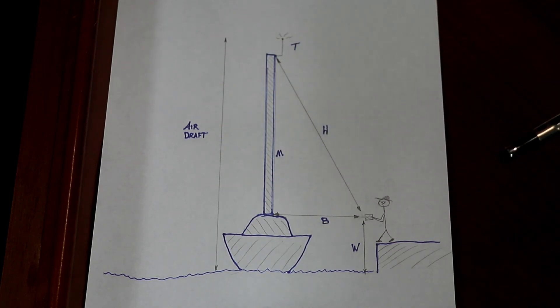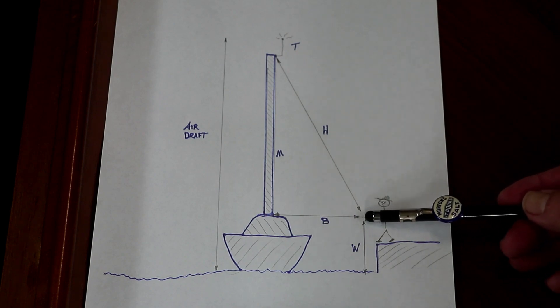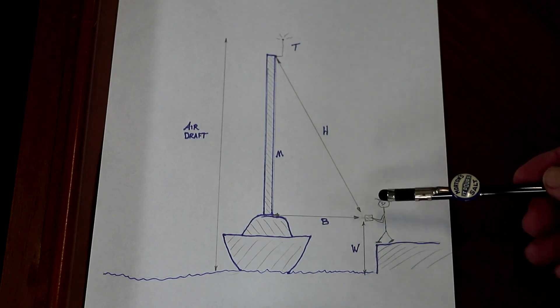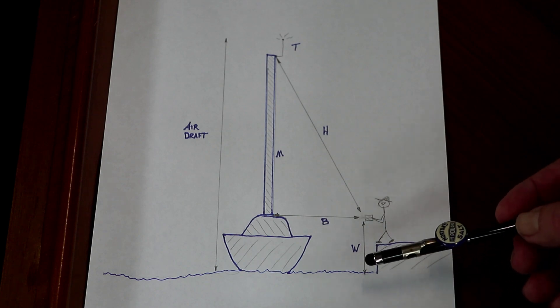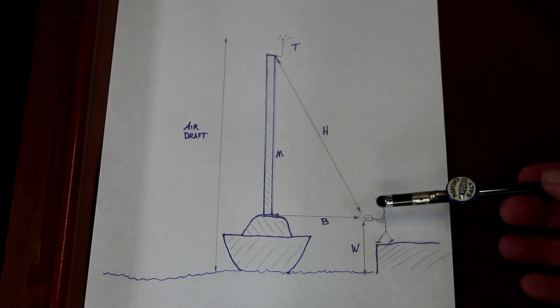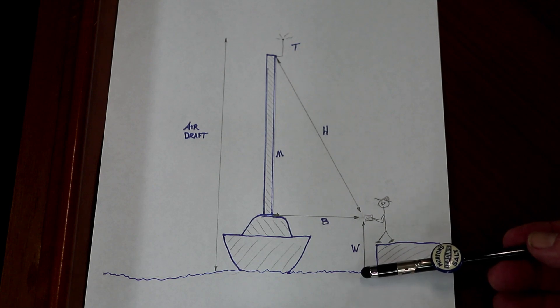The next thing we need to measure is the distance from the laser tool down to the water. Since the laser tool does not reflect off water, we have to use the physical tape and drop it over the side down to the surface of the water.